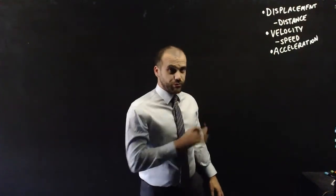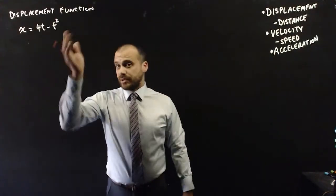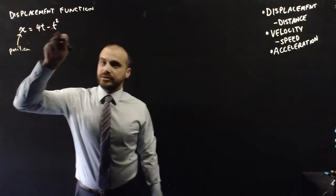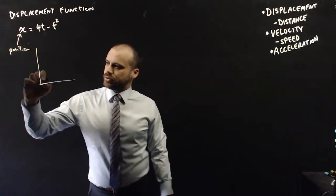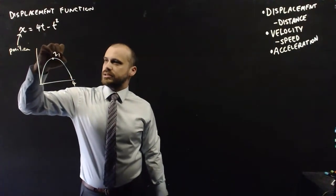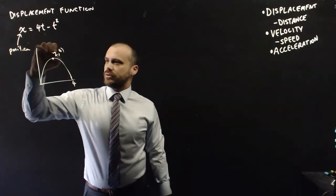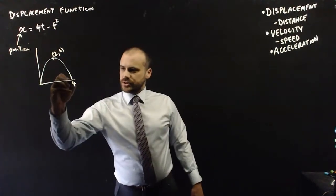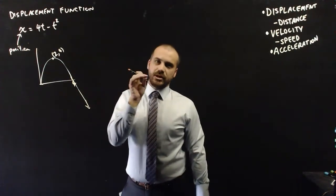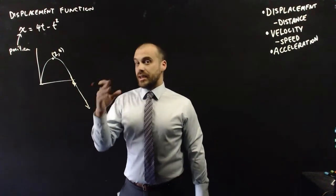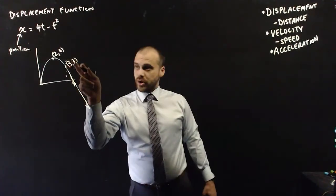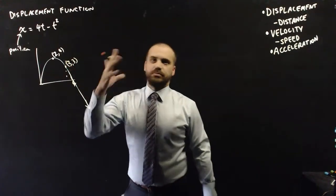So you know all this stuff, we just need to run through it really quickly. This is a displacement function — it gives the position of an object at any given time. This particular one looks something like this, where this point is 4 and this point is 2 and 4. So where is the object at time 3? At time 3, it's 3 metres away from its point of origin.